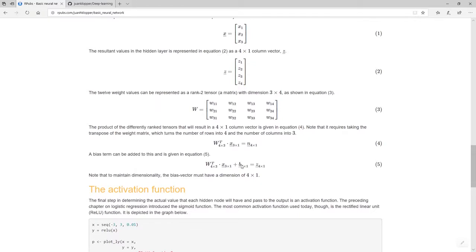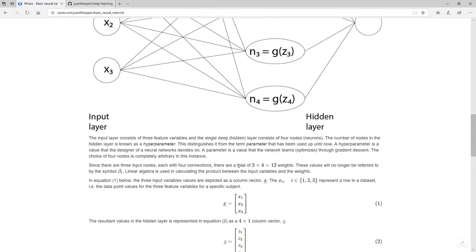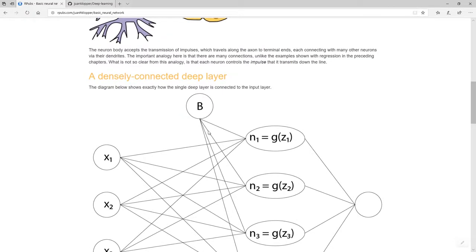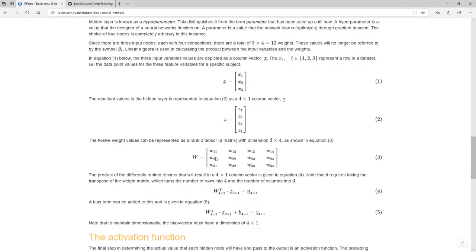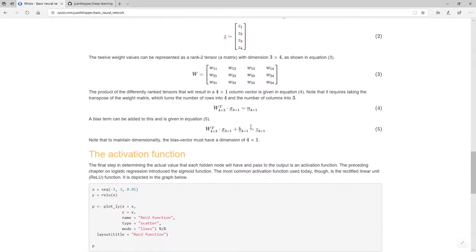And I can, if I wanted to, even add this bias node, and it'll also have to be, if I add that, it also has to be a 4 by 1 column vector. And if you look at up here, of course, 1, 2, 3, 4, it's got to have these four connections. So 4 by 1, and that leaves me with a 4 by 1 column vector.